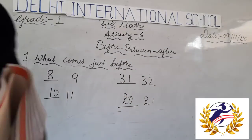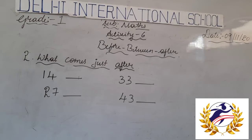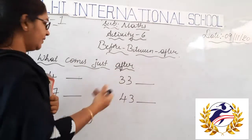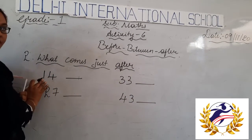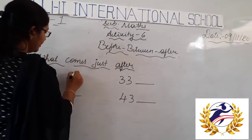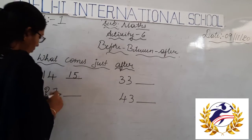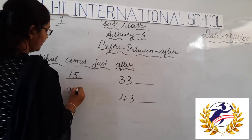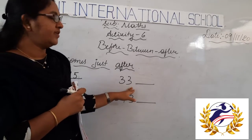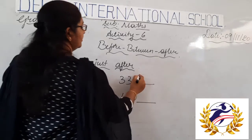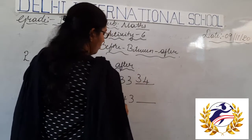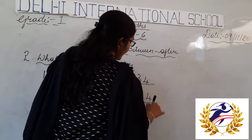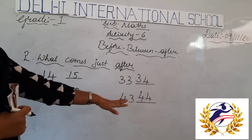Next, what comes just after a number. What comes just after 14? That is 15. What comes just after 27? That is 28. What comes just after 33? That is 34. What comes just after 43? That is 44. Like this, we write the after numbers.